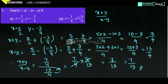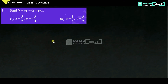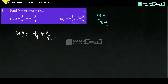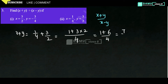Now x equals 1 by 4 and y equals 3 by 2. We have to find x plus y by x minus y. So x plus y equals 1 by 4 plus 3 by 2. The LCM of 4 and 2 is 4. So 1 plus 3 into 2 gives 1 plus 6 by 4, that is 7 by 4.